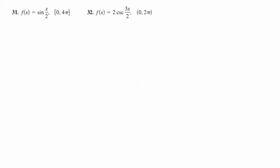We'll do one example here, and then I would only expect you to know how to do simple examples of these types of problems. So let's get started. Number 31. We have f of x is equal to sine of x over 2, and we're on the closed interval from 0 to 4 pi.